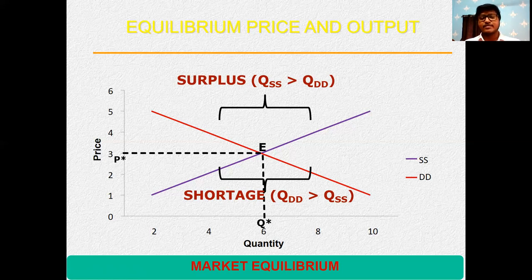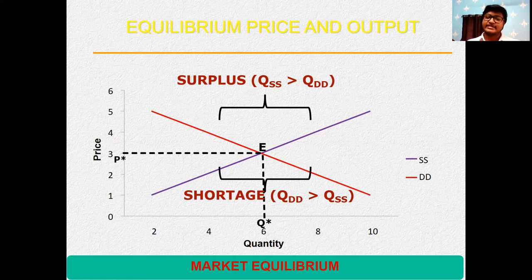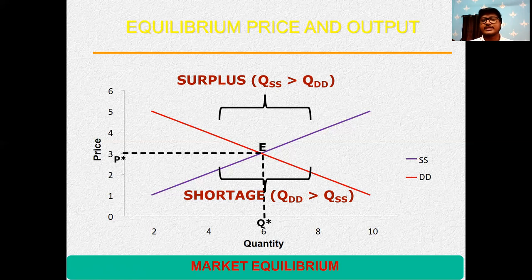In this lecture, I have discussed what is market, what is market equilibrium, what is excess supply and excess demand — meaning surplus and shortage — and what happens to the price of the commodity during shortage and surplus. To summarize: market will be in equilibrium whenever demand equals supply. During shortage, price will increase. During surplus, price will decrease. Thank you very much.